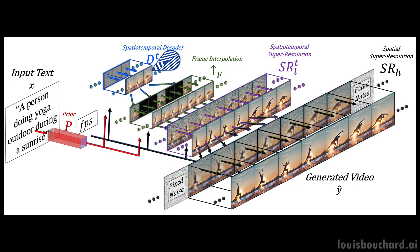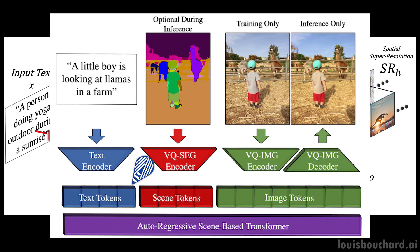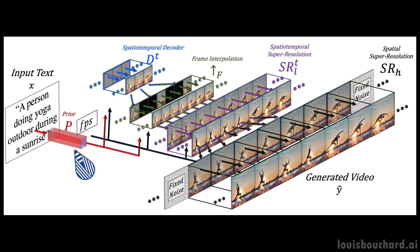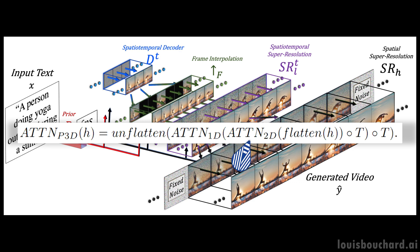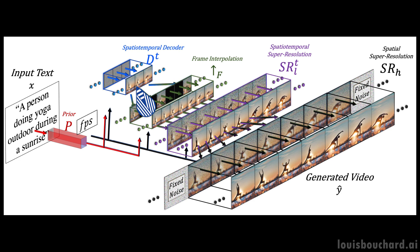They also guide generations with text input, which is very similar to image models using CLIP embeddings — a process I go into detail on in my stable diffusion video. They also add the temporal dimension when blending the text features with the image features, keeping the attention module from Make a Scene and adding a one-dimensional attention module for temporal considerations. Essentially, they copy the image generator model and duplicate the generation modules for one more dimension to have all 16 initial frames.